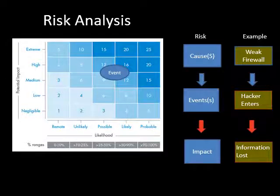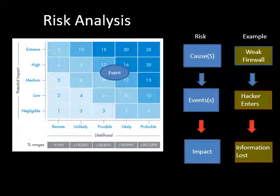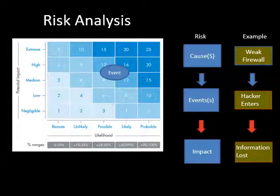Risk analysis is largely about likelihood and impact. There is a cause, an event, and an impact. An extreme event has a lot of impact and high probability — without doing anything, that situation could be really high impact, very likely, and therefore have significant consequences. For example: a very weak firewall, a hacker enters, and information is lost. Something must be done about risks that are extreme and probable, and all risks require some level of management.